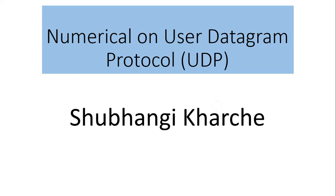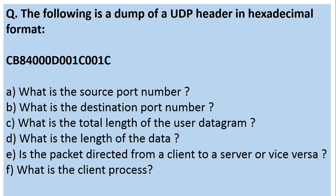Hello everyone. In this video I am going to explain a numerical on User Datagram Protocol. The numerical is: the following is a dump of a UDP header in hexadecimal format: CB8400D001C001C.